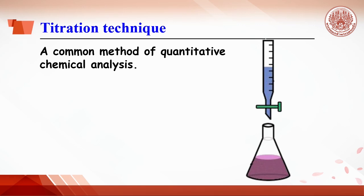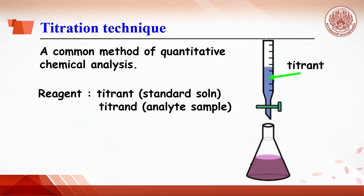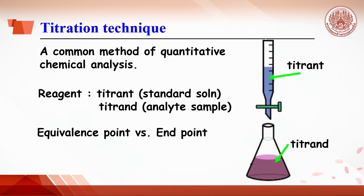Titration is a technique used to find the concentration of a sample solution. Usually, a reagent with known concentration is filled in the buret — this is called the titrant — and the unknown sample, also called the analyte or titrand, is pipetted into the Erlenmeyer flask. When the titrant and titrand react, two points are considered: the equivalence point and the end point.